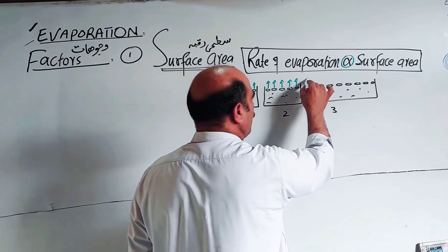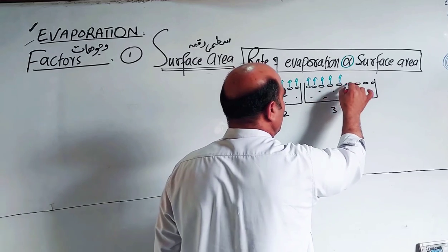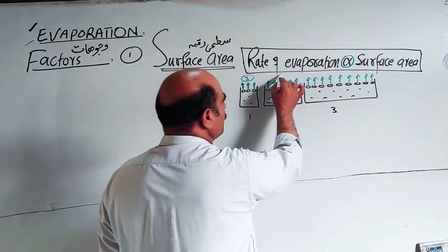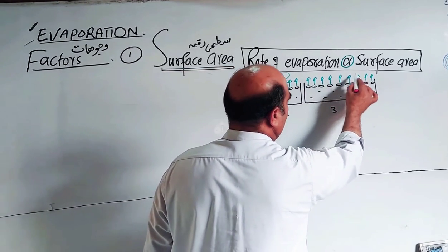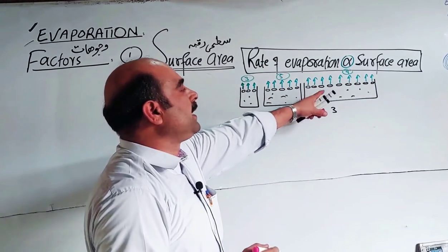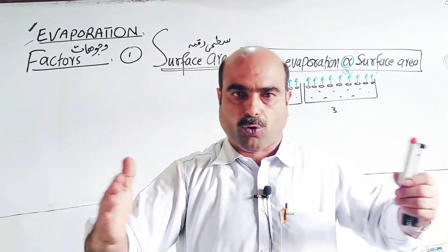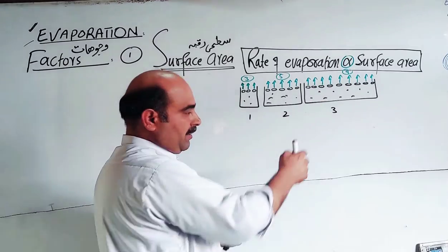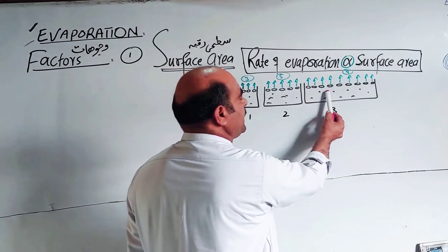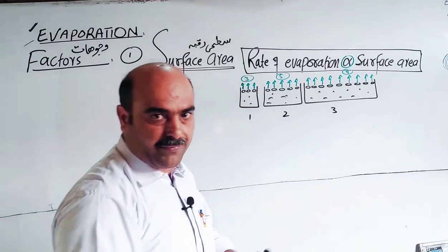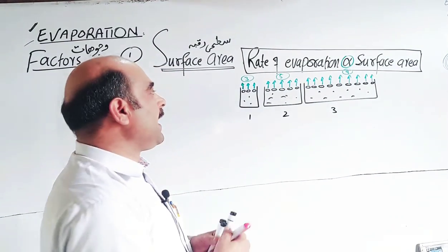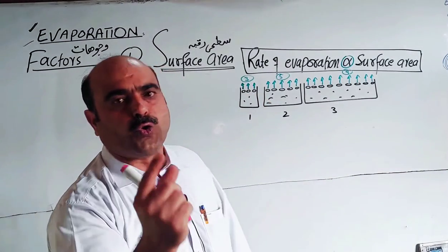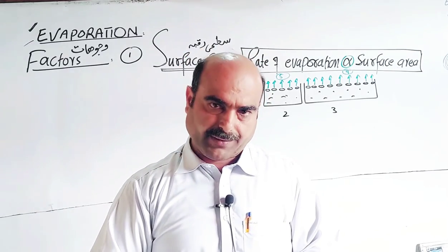Looking at the top surface of each container: container one has the smallest surface area, container two is medium, and container three has the largest. The container with the larger top surface area allows more hot molecules to escape per unit time. Therefore, larger the surface area of the container, higher will be the rate of evaporation; smaller the surface area, lower will be the rate of evaporation.